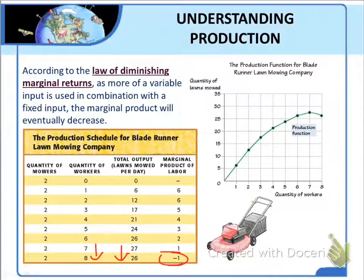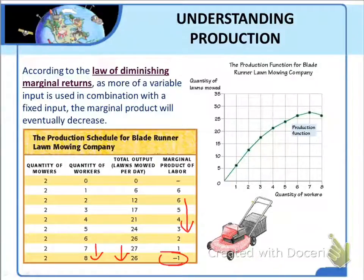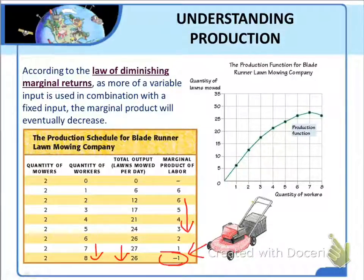Be careful not to confuse diminishing marginal product with negative marginal product — they are very different. When marginal product is diminishing, it is going down but is still positive. Hiring additional workers still causes total output to rise, just by smaller and smaller amounts. But when marginal product is negative, employing more workers actually causes total output to fall. Above that point, total output continues to rise even though marginal product is declining.